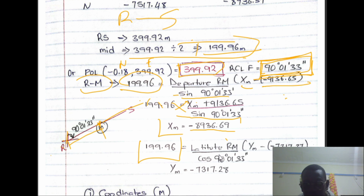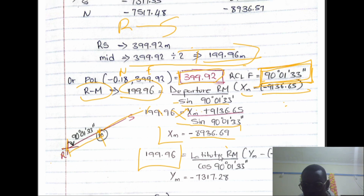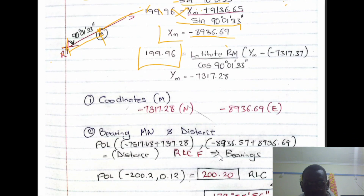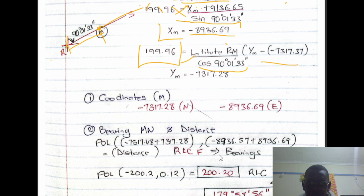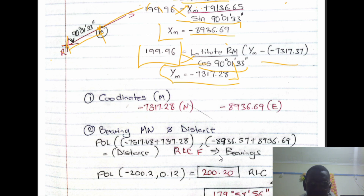We do the same for the latitude. Distance equals latitude RM — that is the change in northing of M minus that of R, found on our given coordinates — over cosine of 90°01'33''. By cross multiplication, the negatives have a significant effect here. I had not used the negatives correctly before, so these are now my final correct coordinates. Use the calculator carefully with cross multiplication, and remember when changing sides the negative applies.